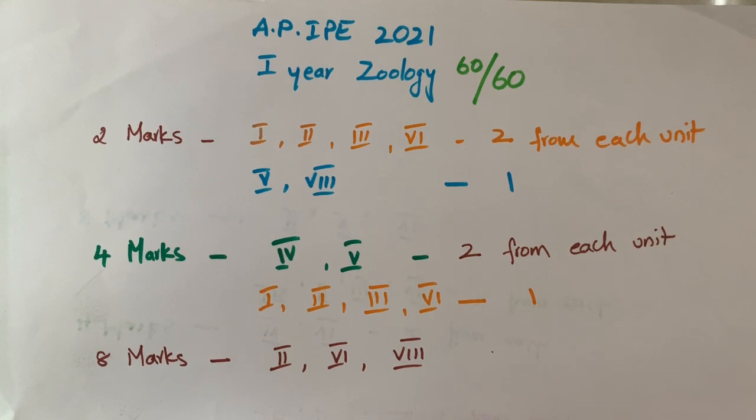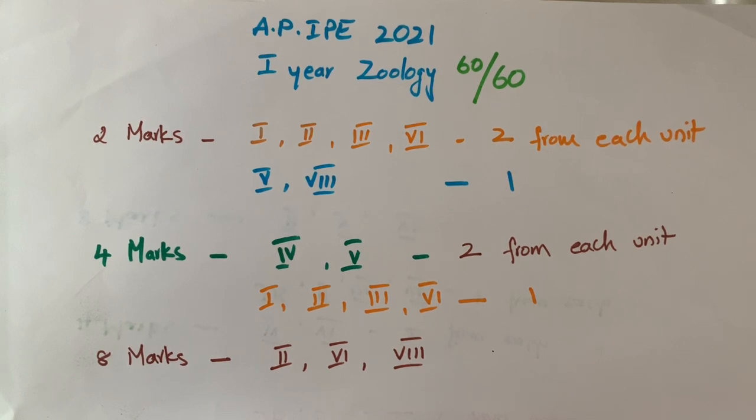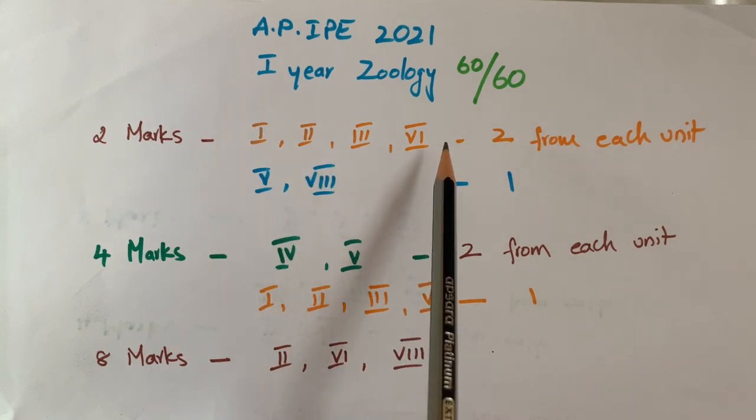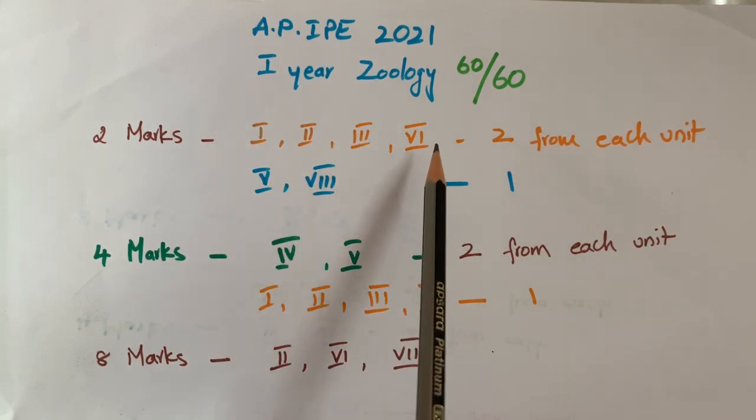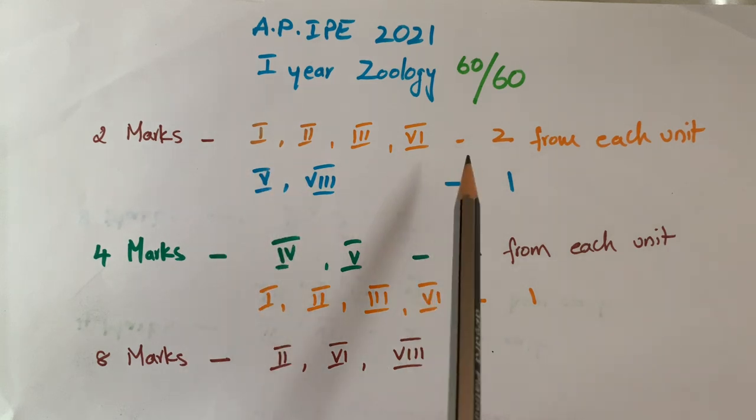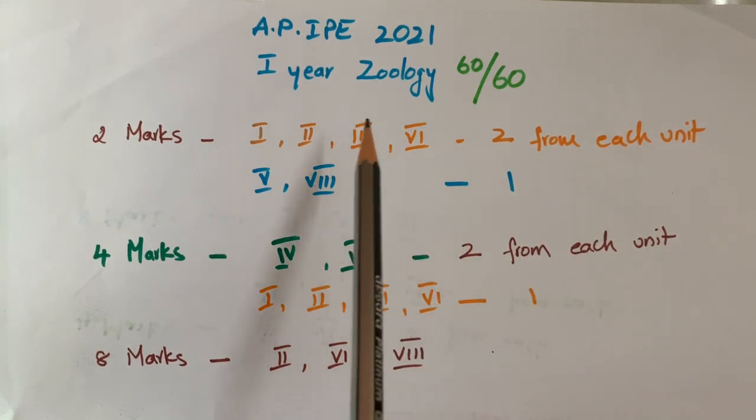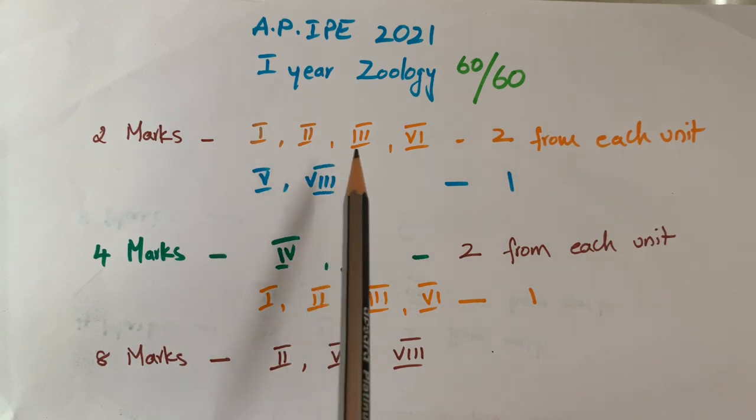For 2 marks questions in section A, you have to answer 2 marks questions from units 1, 2, 3, and 6. From these four chapters, from each unit, 2 two-marks questions come.